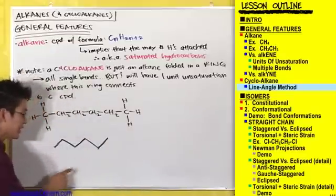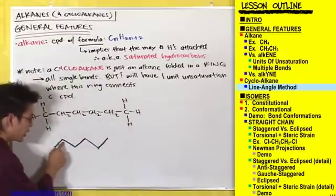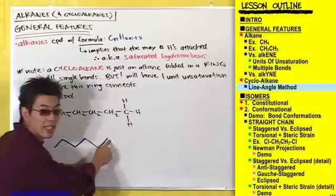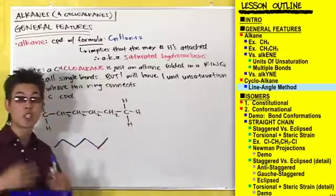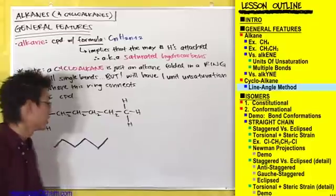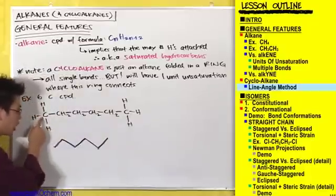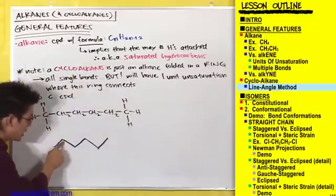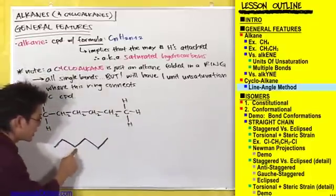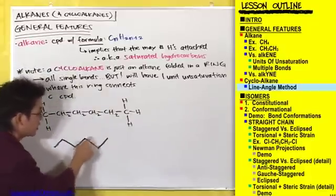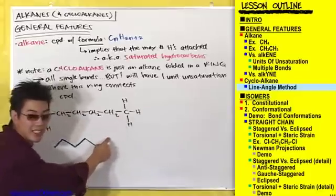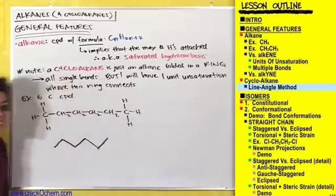At the end of each of these lines — here, here, here, here, here, and here — there is a carbon. So this carbon is here, this carbon is here, this carbon is here, this carbon is here, this carbon is here, and this carbon is here.